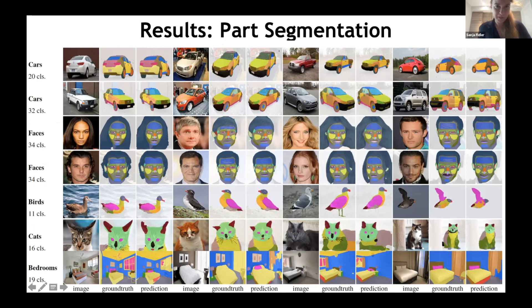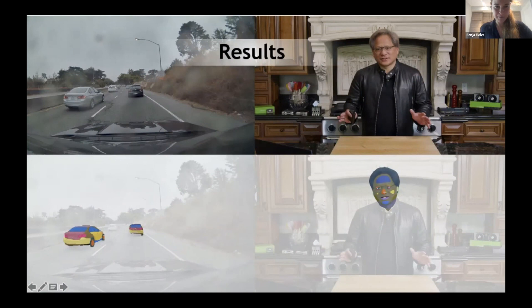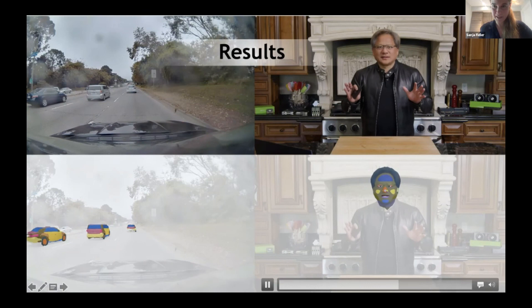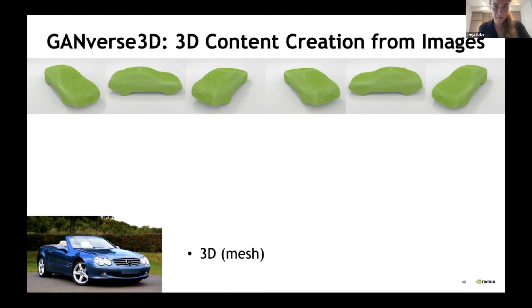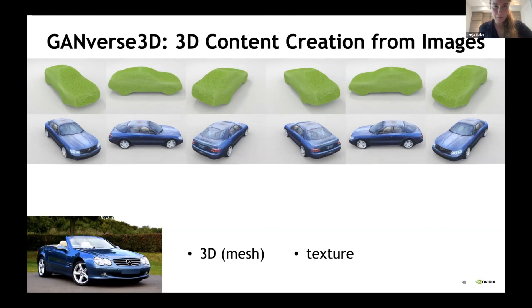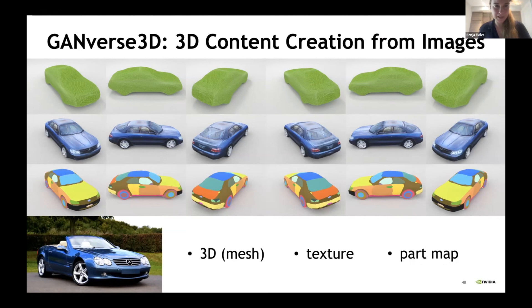The results look very good — ground truth versus prediction show this working nicely. You can also apply this method frame-by-frame on real data: driving datasets, and even Jensen's GTC kitchen video. In terms of 3D, we now have the mesh and texture from before, but we can also produce part labels — not only in 2D, but lifting them to 3D using the same differentiable rendering tricks. This gives us part mapping in 3D, which provides material priors per part: windows are transparent, the body is metallic. We also know where the wheel is, and can swap the predicted wheel — which is not perfectly accurate — with a rigged wheel created by an artist.